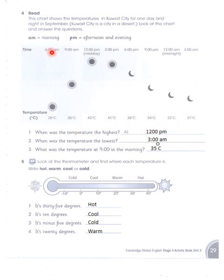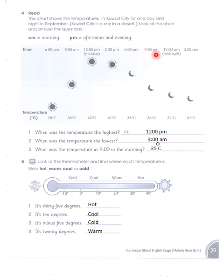For example, at 6 AM the temperature is 28 degrees centigrade. At 9 AM, temperature is 35 degrees centigrade. At 12 PM, that is midday, the temperature is 42 degrees centigrade. At 3 PM it is 41 degrees centigrade. At 6 PM it is 38 degrees centigrade. At 9 PM it is 34 degrees centigrade.